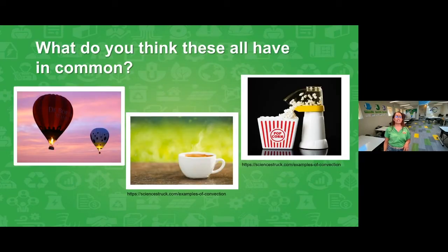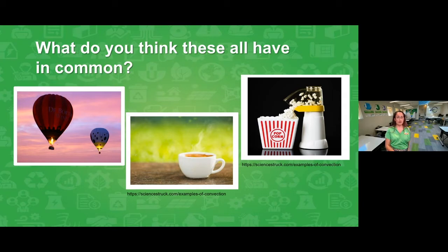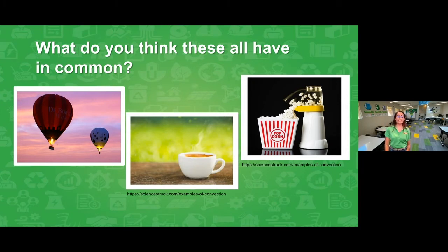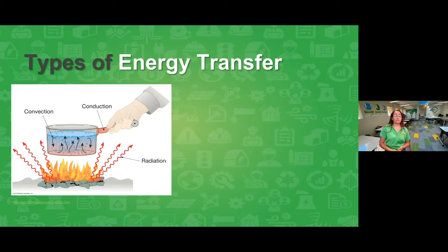Let's get our brains thinking about what energy is. Look at these photos — what do all three have in common? Drop your answers in the chat. We have a hot air balloon on the left, a hot drink in the center with steam coming out of it, and a hot air popcorn popper on the right. They all have hot air involved, and that's going to lead us to our topic about how to build a solar tower.